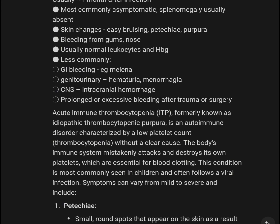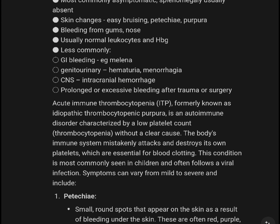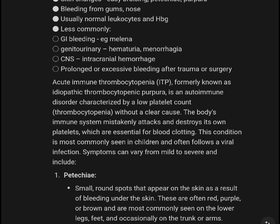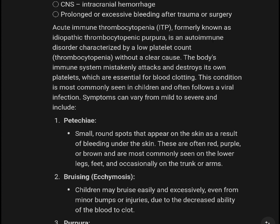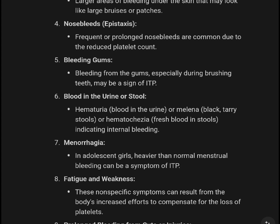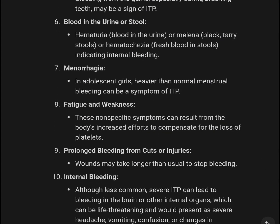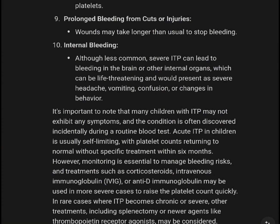Most commonly, splenomegaly is absent and skin changes include petechiae. Bleeding from gums and nose is common. Usually there are no abnormalities in leukocytes or hemoglobin. Less common manifestations include genitourinary hemorrhage, menorrhagia, CNS involvement, intracranial hemorrhage, prolonged bleeding after trauma or surgery, petechiae, bruising, ecchymosis, epistaxis, bleeding gums, blood in urine or stools, menorrhagia, fatigue, and weakness.